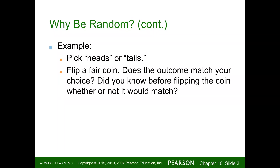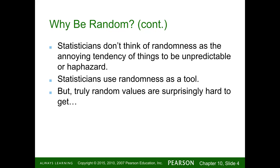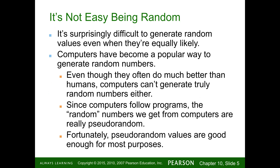If you flip a coin, you could say heads, but you really don't know the outcome beforehand. Statisticians don't think of randomness as an annoying tendency of things to be unpredictable or haphazard — they use randomness as a tool. But truly random values are surprisingly hard to get; it's not easy to just randomly pick things, and it's surprisingly difficult to generate random values even when they should be equally likely.